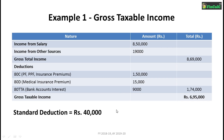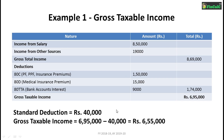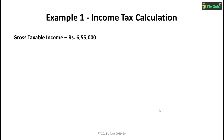So your gross taxable income becomes ₹6,95,000 minus ₹40,000, which equals ₹6,55,000. This is how the standard deduction works for salaried employees and pensioners — it reduces the total tax liability. Now, if you think that the income tax is simply 20% of ₹6,55,000, that is not the correct process for calculating income tax.